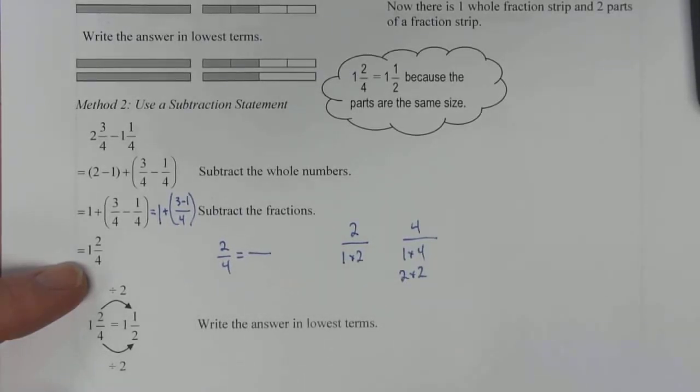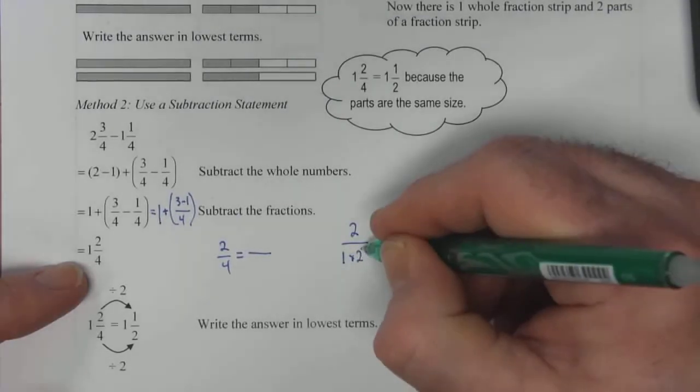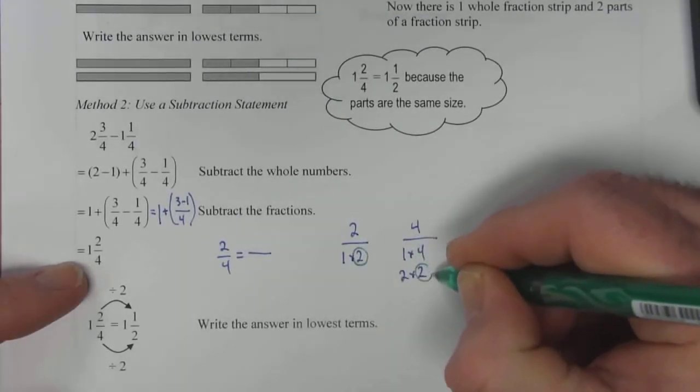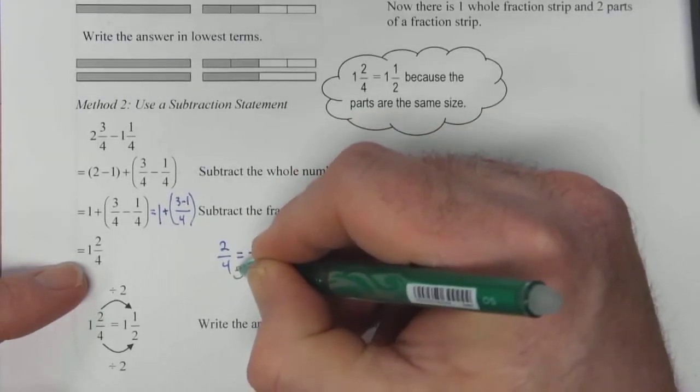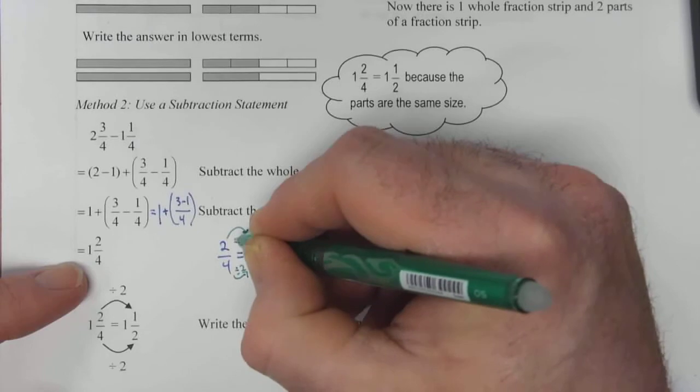So we can see that the common largest common number here is a two. So we're going to take these numbers and we're going to divide by two. We're going to divide by two.